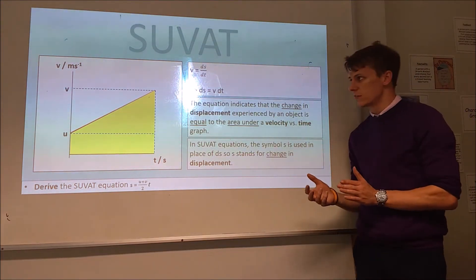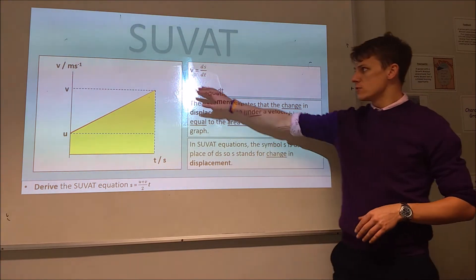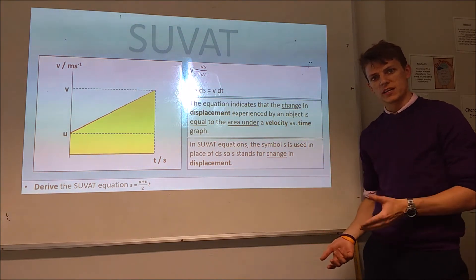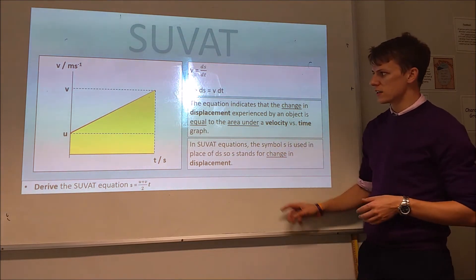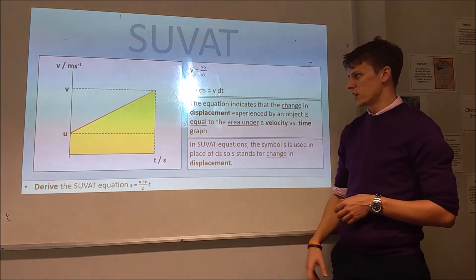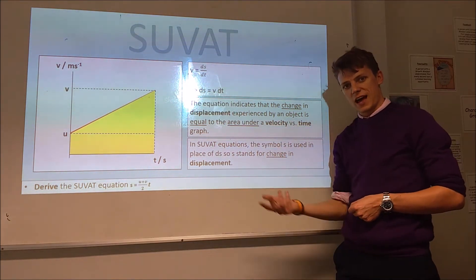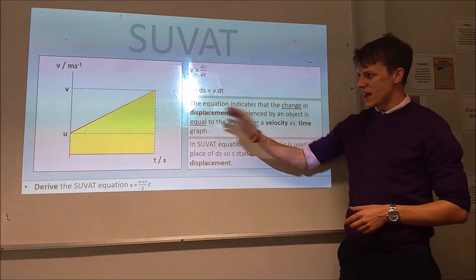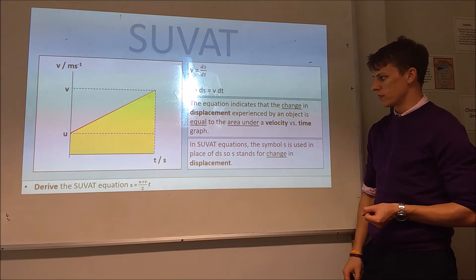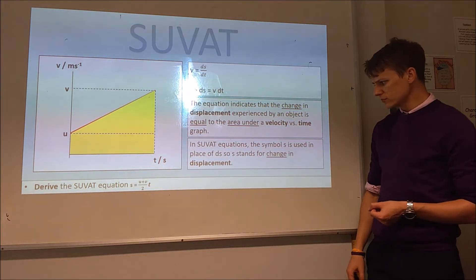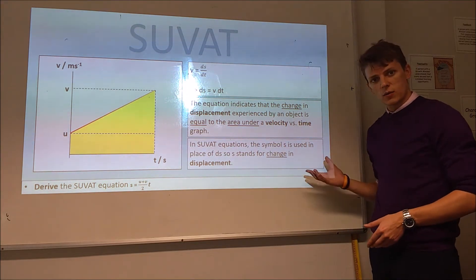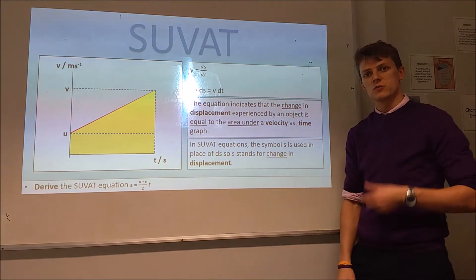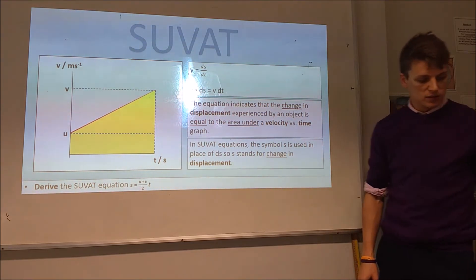To get our second SUVAT equation, we use another definition: velocity is the rate of change of displacement, or the gradient of a displacement versus time graph. Rearranging, the change in displacement equals the velocity multiplied by the time at which it was at that velocity. This means if we want to know the change in displacement, we need the area under a velocity versus time graph. In SUVAT equations, we use the symbol S for the change in displacement.